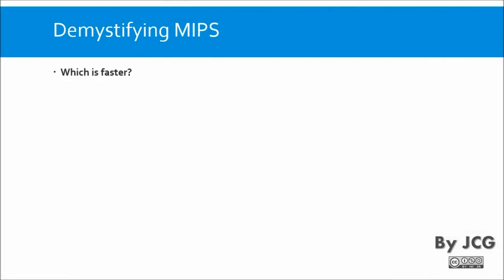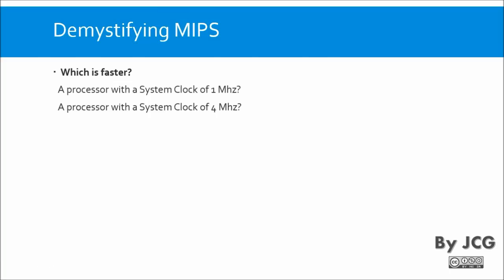Now let's see an example related to microcontrollers. Which do you think is faster: a microprocessor with a system clock of one megahertz, or a processor with a system clock of four megahertz? You'd be inclined to think that the greater the system clock, the faster the microprocessor. But as we saw, you might be wrong.